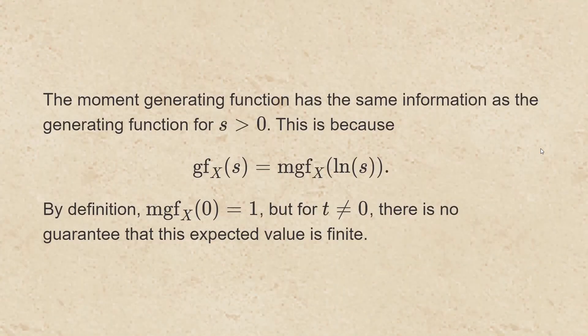The moment generating function has the same information as the generating function for s greater than 0. This is because the generating function of the random variable x evaluated at s is the same as the moment generating function of x evaluated at the natural log of s. By definition, the moment generating function of x at 0 equals 1, but for t not equal to 0, there is no guarantee that this expected value is finite.